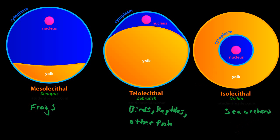Sea urchins, these spiky sea-dwelling creatures, have the isolecithal type of egg. Telolecithal belongs to the birds, reptiles, and some types of fish. The example here is zebrafish. And then we have mesolecithal eggs, the Xenopus. Xenopus is just the name for some type of frog. Most types of frogs have mesolecithal eggs.